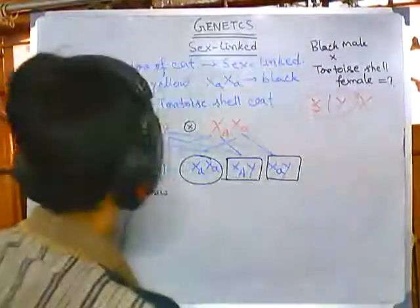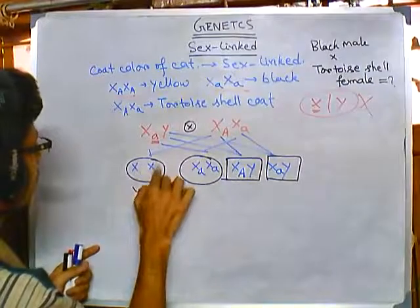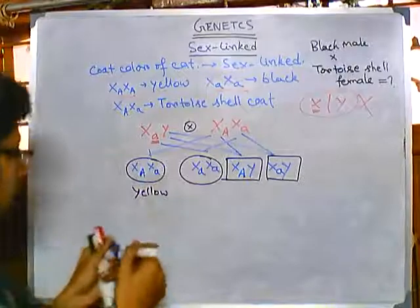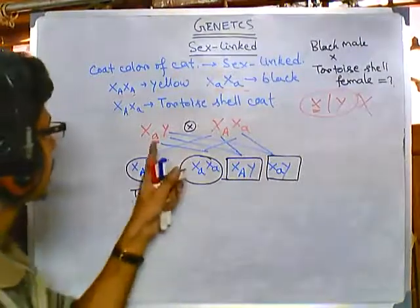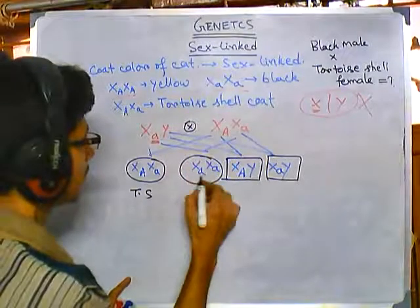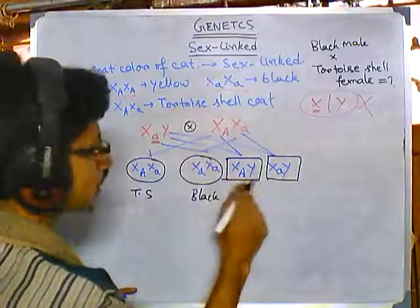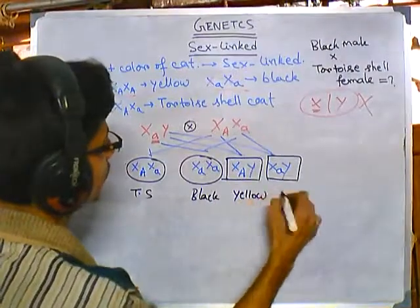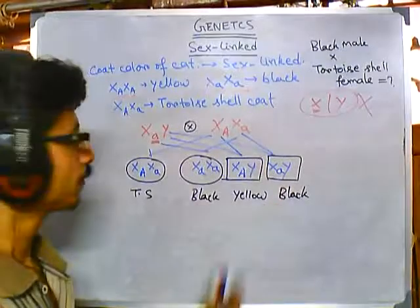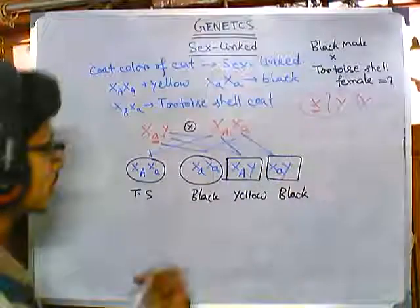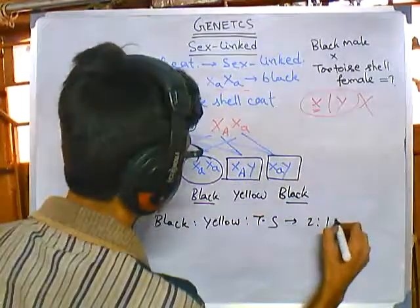To clarify the correction: small a gives black coat, not yellow. So X-caps-A X-small-a gives tortoiseshell, X-small-a X-small-a gives black coat (female), X-caps-A Y gives yellow coat (male), and X-small-a Y gives black coat (male). The phenotype ratio among offspring is: two black, one yellow, one tortoiseshell.